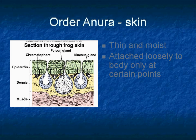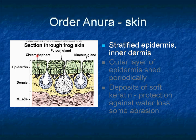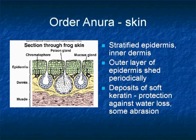A frog's skin is thin and moist and loosely attached to the body at certain points. Histologically, the skin contains two layers: an outer stratified epidermis and an inner spongy dermis. Frogs periodically shed their outer layer of epidermis because it contains deposits of keratin, a tough fibrous protein that reduces abrasion and water loss from the skin. Terrestrial organisms like toads have heavy deposits of keratin, though amphibian keratin is soft compared to the hard keratin of amniotes, which include reptiles, birds, and mammals.